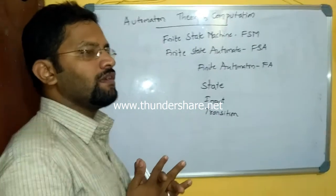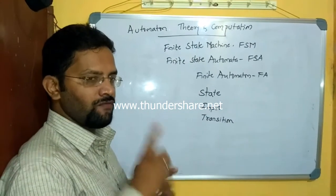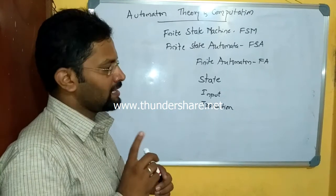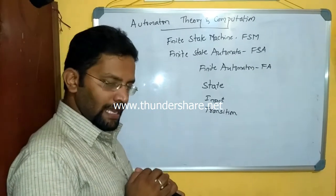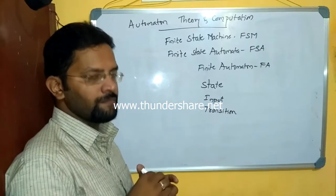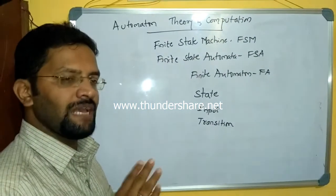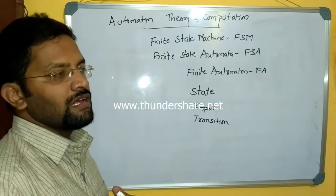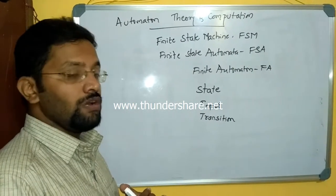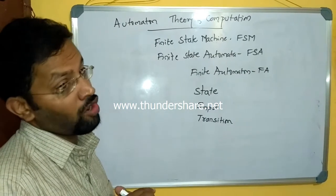A transition is the process of changing state from one to another on receiving an input. When a transition happens, it may not always be to a new state. For example, a car in motion that increases speed by changing gear is still in the same state. Even though input is given, the transition happens from the same state to itself. So transition may happen from one state to another where that other state may not be a new state.